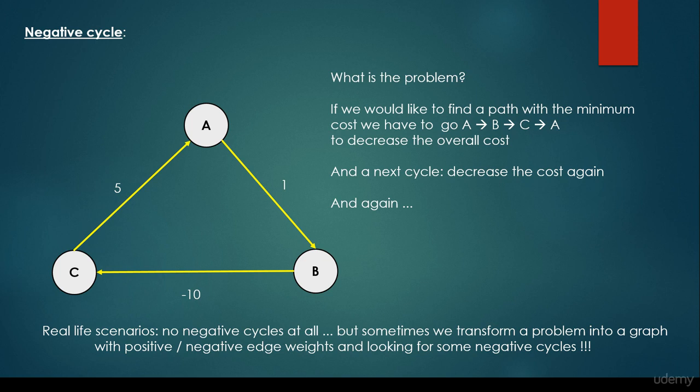And if we are looking for the shortest path, the minimum path, of course the algorithm is going to tell us that we have to make infinite loop in this negative cycle. So basically that's the problem.